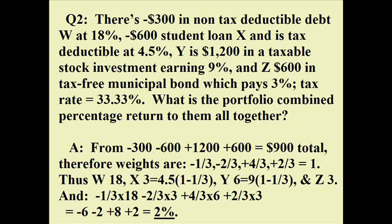Our two debts are minus $300 in a non-deductible debt at 18% (like a credit card) and minus $600 in a tax-deductible student loan at 4.5%. Our investments are plus $1,200 earning 9% (taxable) and $600 in a tax-free municipal bond at 3%. For weights: −300 − 600 + 1200 + 600 = $900 total. The weights are −1/3, −2/3, +4/3, and +2/3, which add to one.